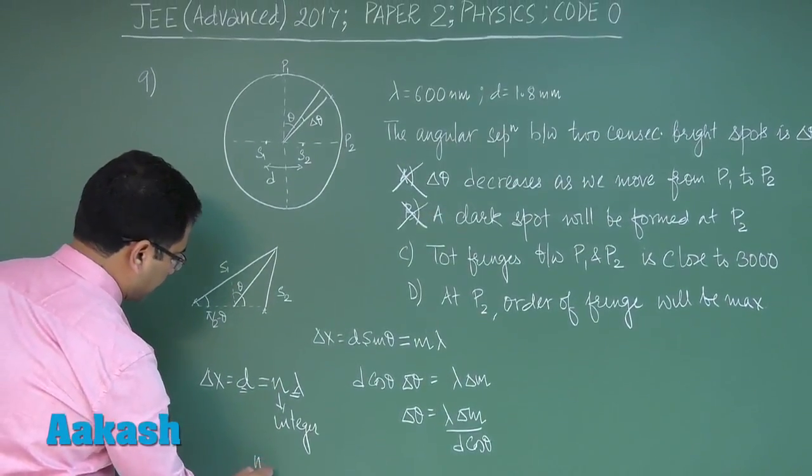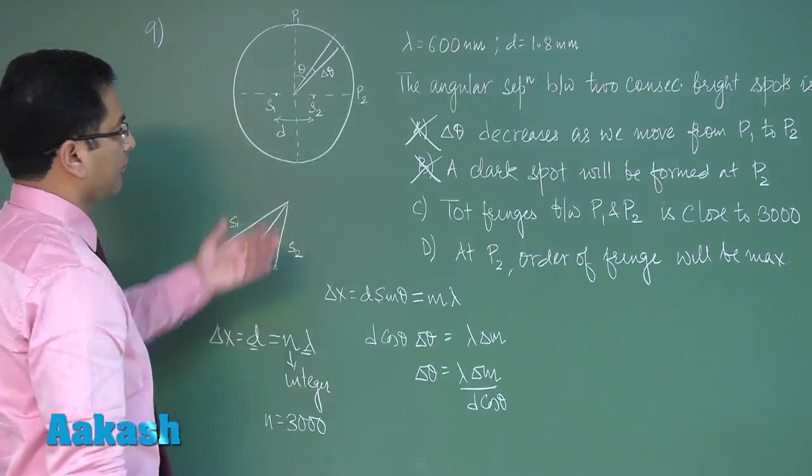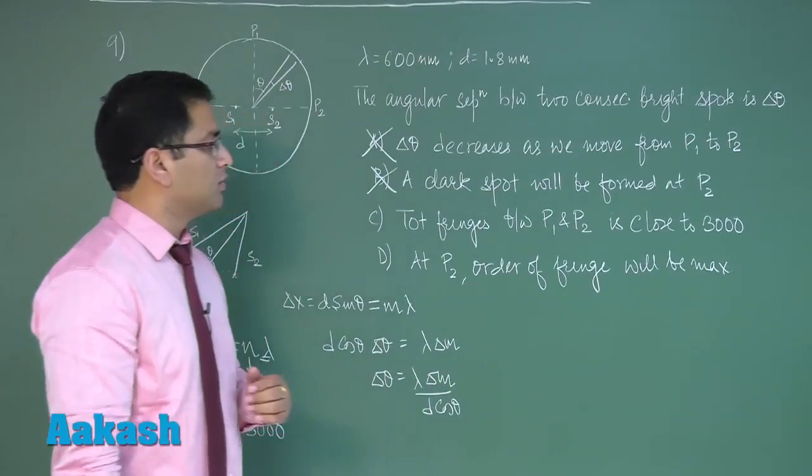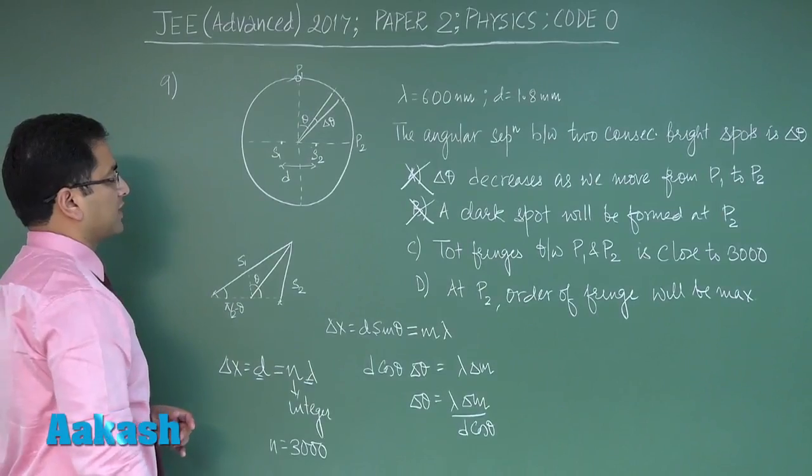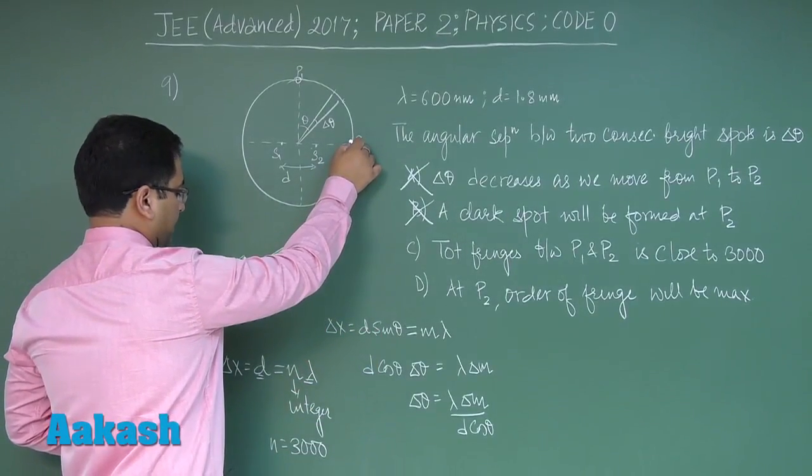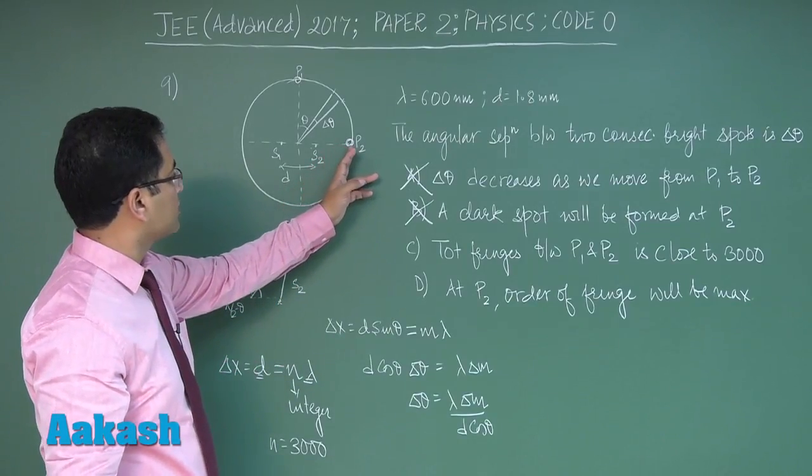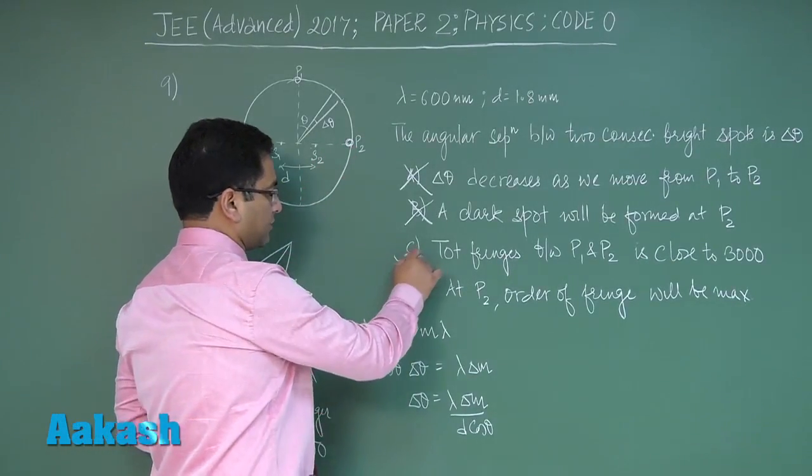Now total fringes between P1 and P2 is close to 3000, that's right, because here the path difference is 0 and here the path difference is 3000 times Lambda. In other words, the 3000th bright point is here, so the total fringes, that would be correct.